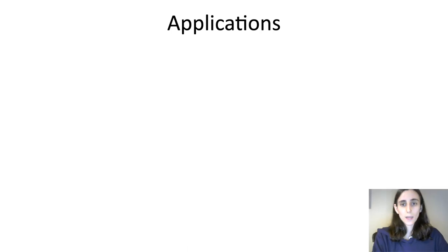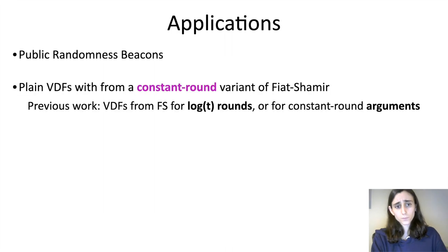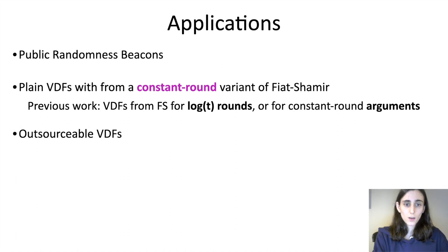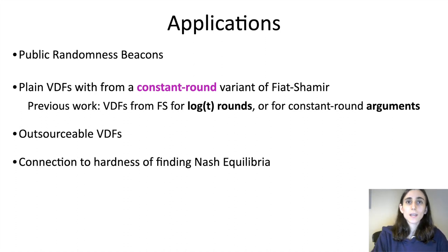We also show the following applications of continuous VDFs. First, public randomness beacons, the notion that I talked about before. Second, we show that if you view our continuous VDF as a plain VDF, then this gives VDFs from a constant round variant of Fiat-Shamir, whereas previous constructions relied on Fiat-Shamir for logarithmically many rounds or for constant round arguments. We also get outsourceable VDFs, which I also talked about before. And lastly, we get this really surprising connection to the hardness of finding Nash equilibria, which I'm going to elaborate on next.